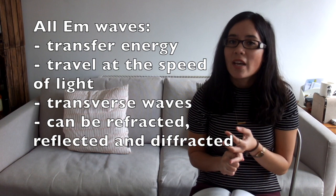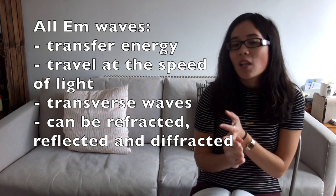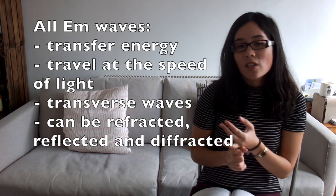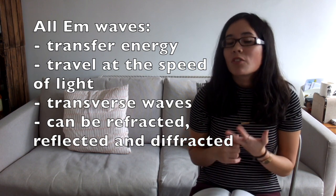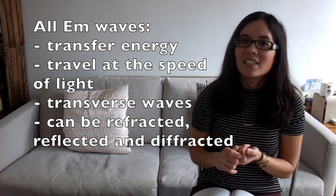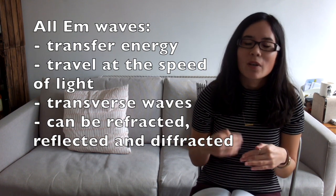Let's look now at the electromagnetic spectrum. Remember that's a family of waves, and they have several things in common. Can you name four things they have in common? All EM waves transfer energy, they travel at the speed of light which is 300 million metres per second, they are all transverse waves, and they can all be refracted, reflected, and diffracted. For some of you that will be worth quite a lot of marks in your exam, so do try and remember that.